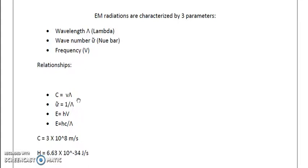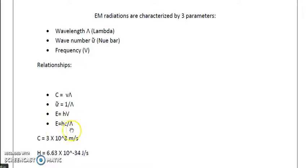Here, c is the velocity of light, which is 3 × 10⁸ meters per second. This is followed by Planck's relationship: E = hν, where E is the energy of the photon, h is Planck's constant (6.6 × 10⁻³⁴ joule·seconds), and ν is the frequency of radiation.